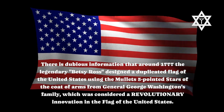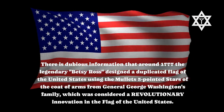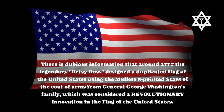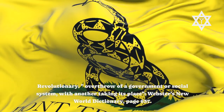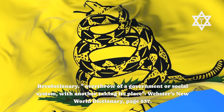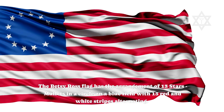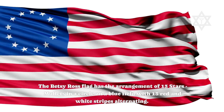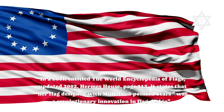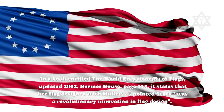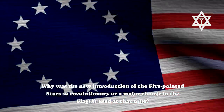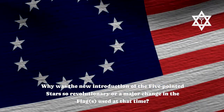There is dubious information that around 1777, the legendary Betsy Ross designed a duplicated flag of the United States using the mullets — five-pointed stars — from General George Washington's family coat of arms, which was considered a revolutionary innovation. The Betsy Ross flag has the arrangement of 13 star mullets in a circle on a blue field with 13 red and white alternating stripes. According to 'The World Encyclopedia of Flags' (updated 2002, Hermes House, page 113), her flag designed with five-pointed stars was described as a revolutionary innovation in flag design.